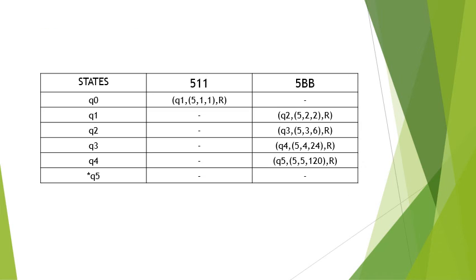Here we will see the transition table for the finite automata. We have states q0, q1, q2, q3, q4, and q5, where the initial state is q0 and the final state is q5. From q0 with input 5,1,1, it goes to q1 and without changing, it moves to the right.